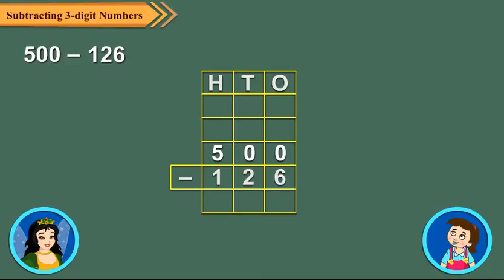Since we have nothing to regroup at tens and ones places, so we first regroup 5 hundreds, 0 tens as 4 hundreds and 10 tens. Now, we regroup 10 tens, 0 ones as 9 tens and 10 ones. And then, subtract the ones digits. 10 ones minus 6 ones is equal to 4 ones.